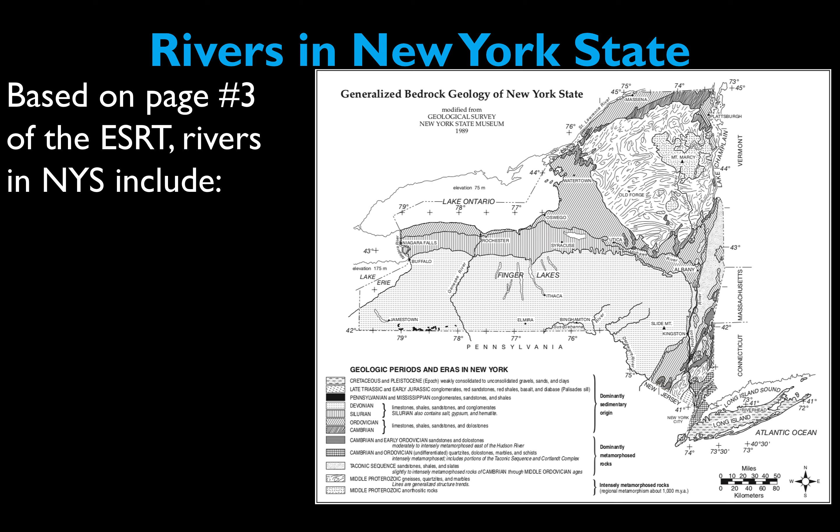This video is designed to teach you about the different types of rivers emphasized on page 3 of the reference table within New York State. The hardest part is actually finding the rivers and figuring out their locations. Some of them are really small font and it can be hard to identify, so I'm going to use this time to identify them for you and highlight where they're located to make it a little easier.